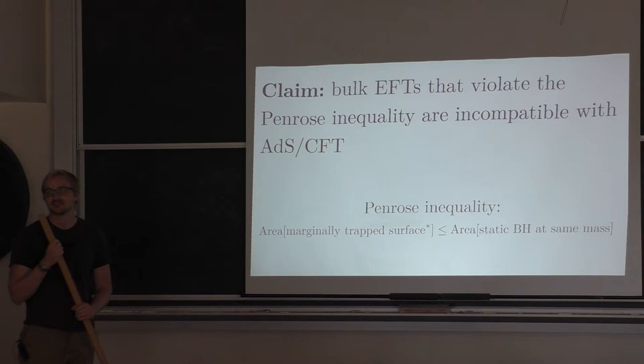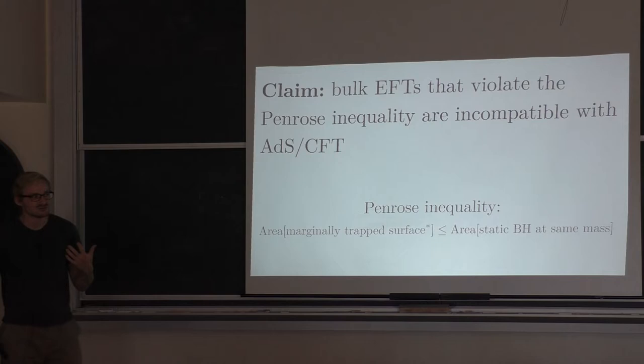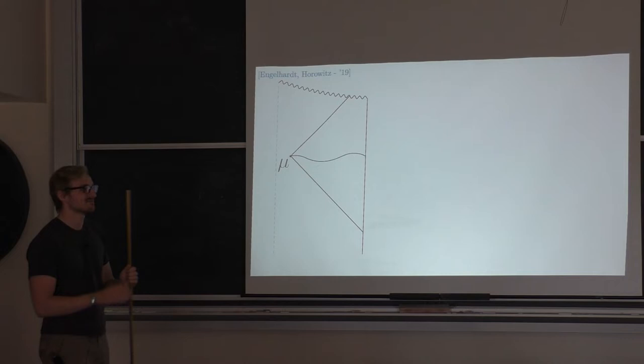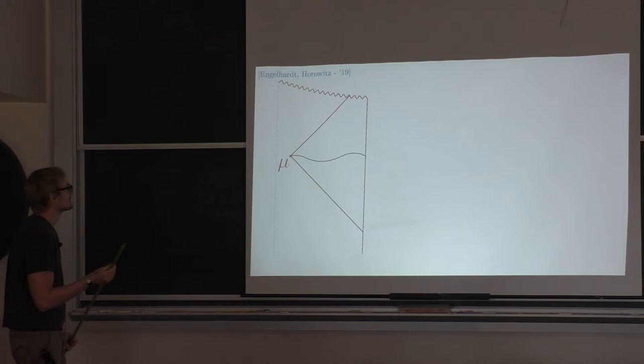I should tell you what the Penrose inequality is. It roughly says that the area of a marginally trapped surface is less than the area of a static black hole at the same mass. This is one way to write the Penrose inequality. It involves a special type of marginally trapped surface, which I'll return to. Let me repeat an argument made a few years ago by Netta Engelhardt and Gary Horowitz.